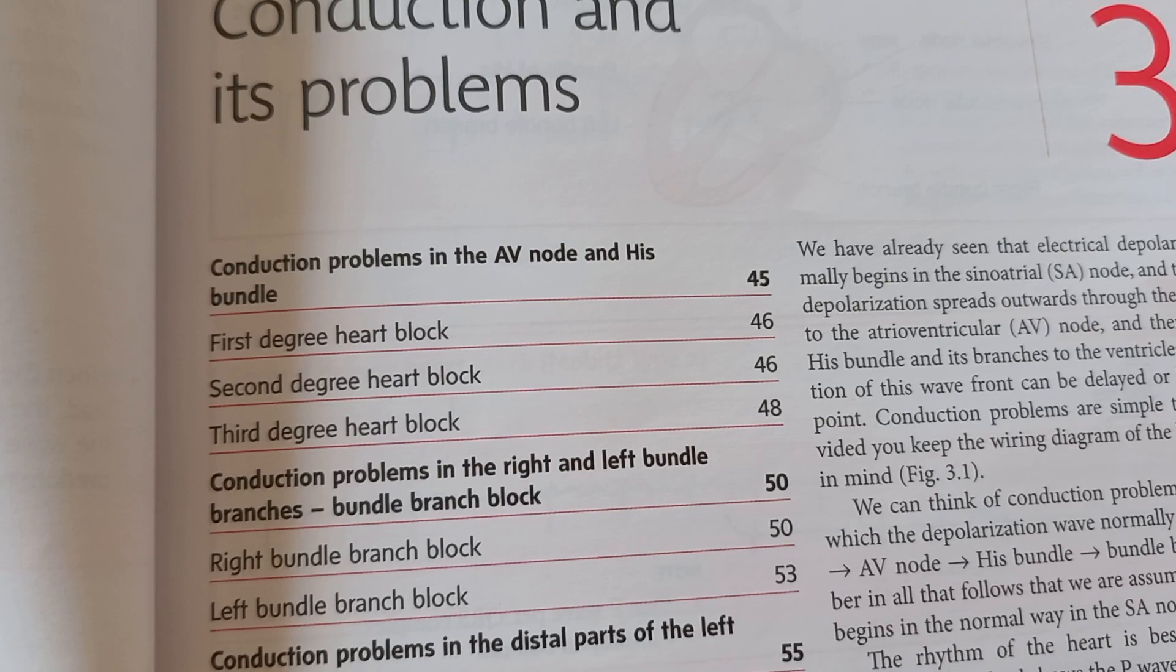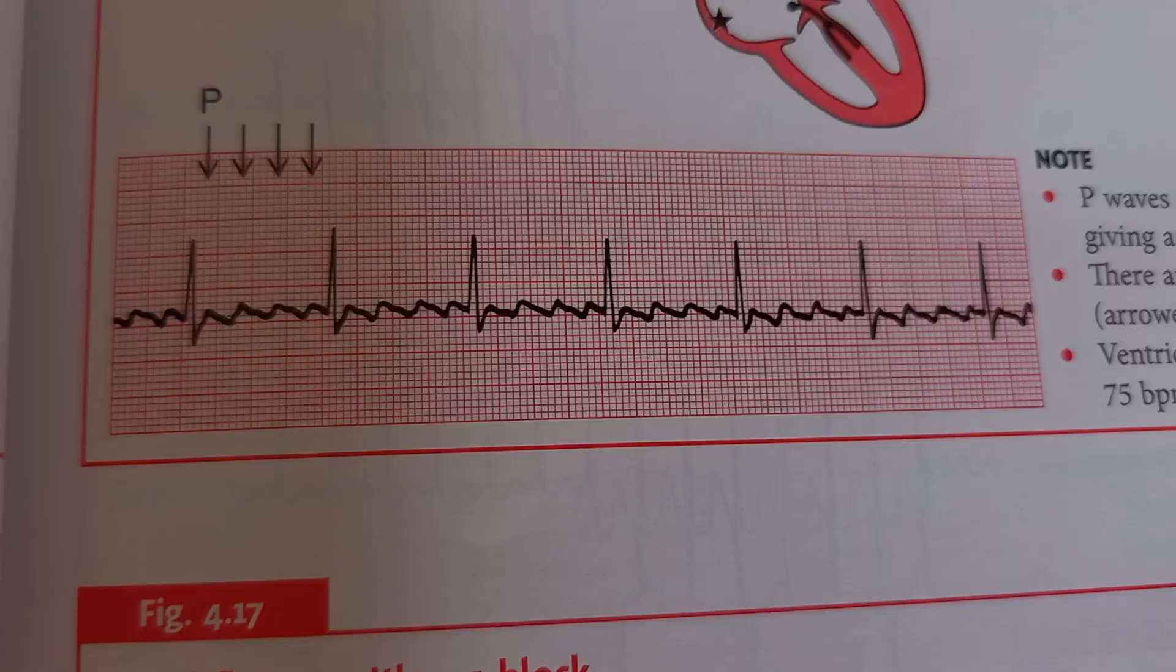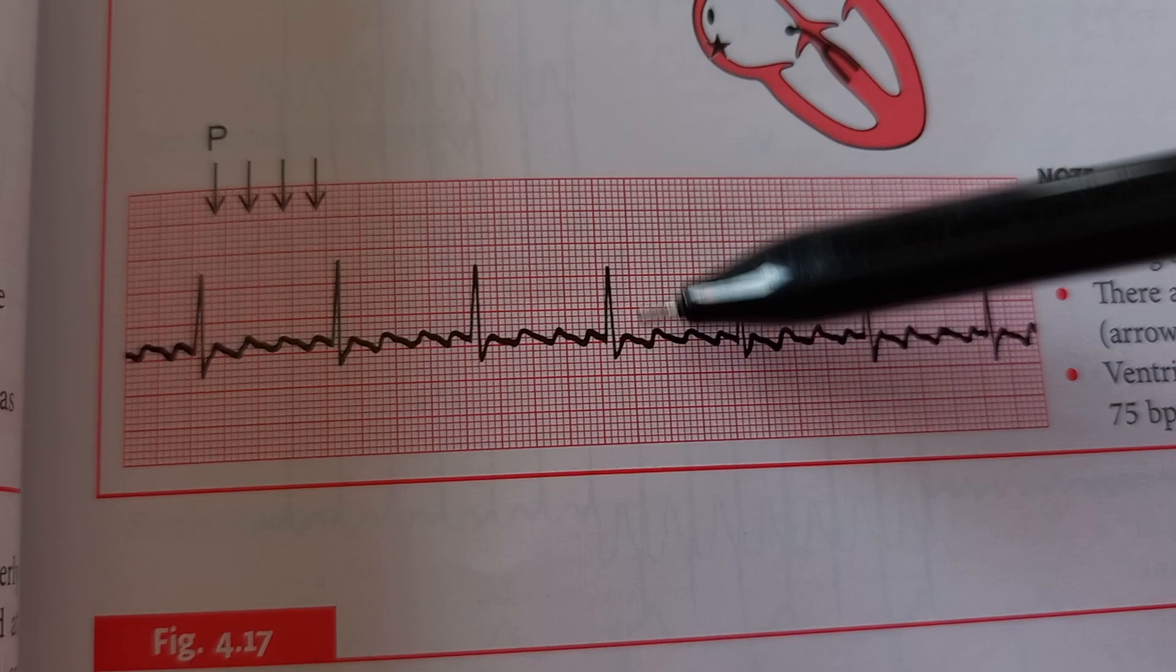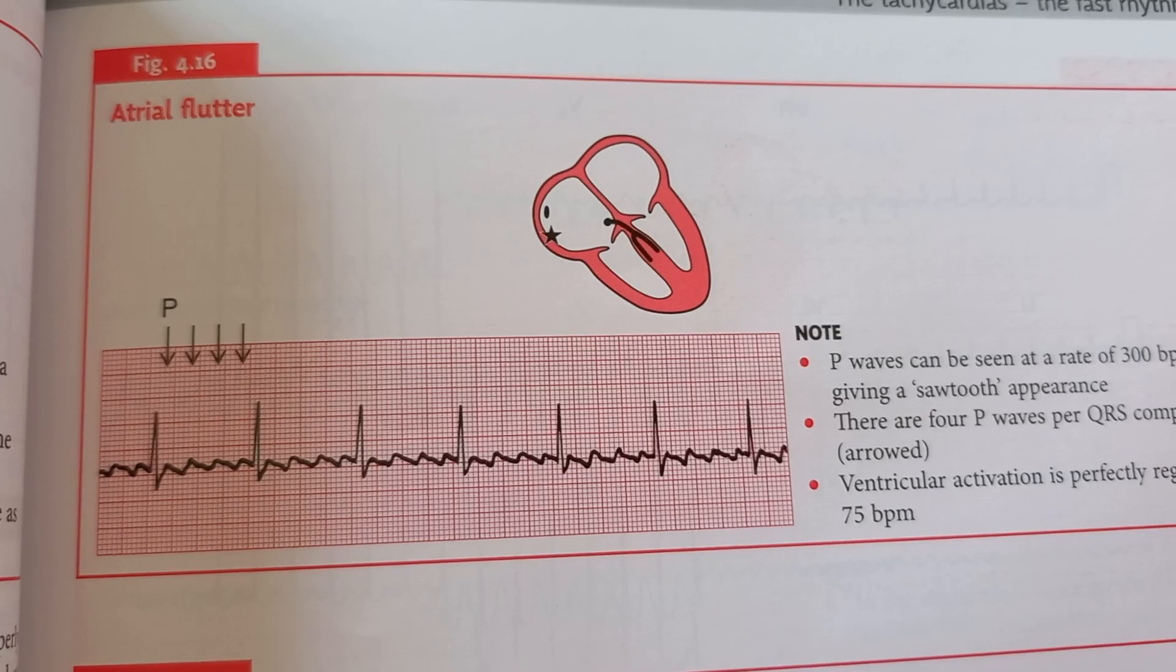What do you think you are seeing in this ECG, people? Here they are saying that this is atrial flutter. Saw-tooth appearance.